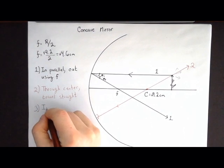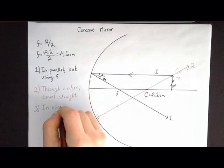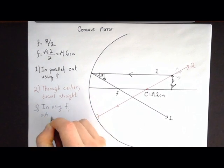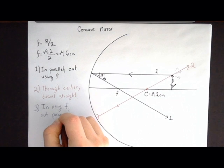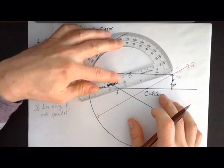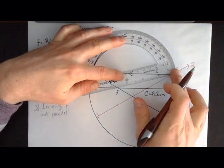In using the focal point, out parallel. Now lenses have two focal points, one on each side, but mirrors only got the one, so we don't have to worry about which focal point to use. That makes it maybe a little bit easier. So we're going to come in using our focal point.